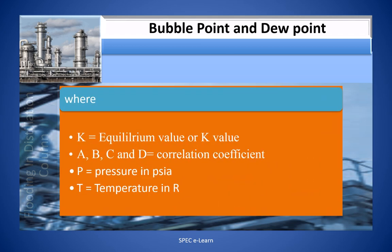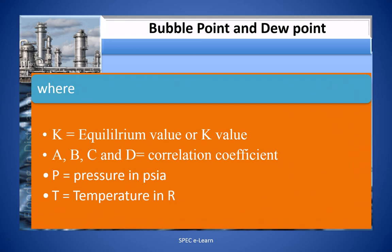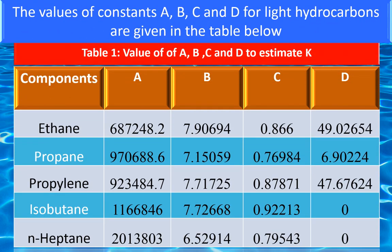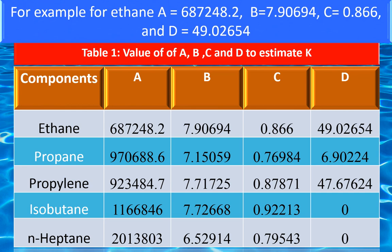Where K is the equilibrium value or K value; a, b, c, and d are correlation coefficients; P is pressure in psia; and T is temperature in degrees Rankine. The values of constants a, b, c, and d for light hydrocarbons are given in the table below. For example, for ethane: a is 687248.2, b is 7.90694, c is 0.866, and d equals 49.02654.